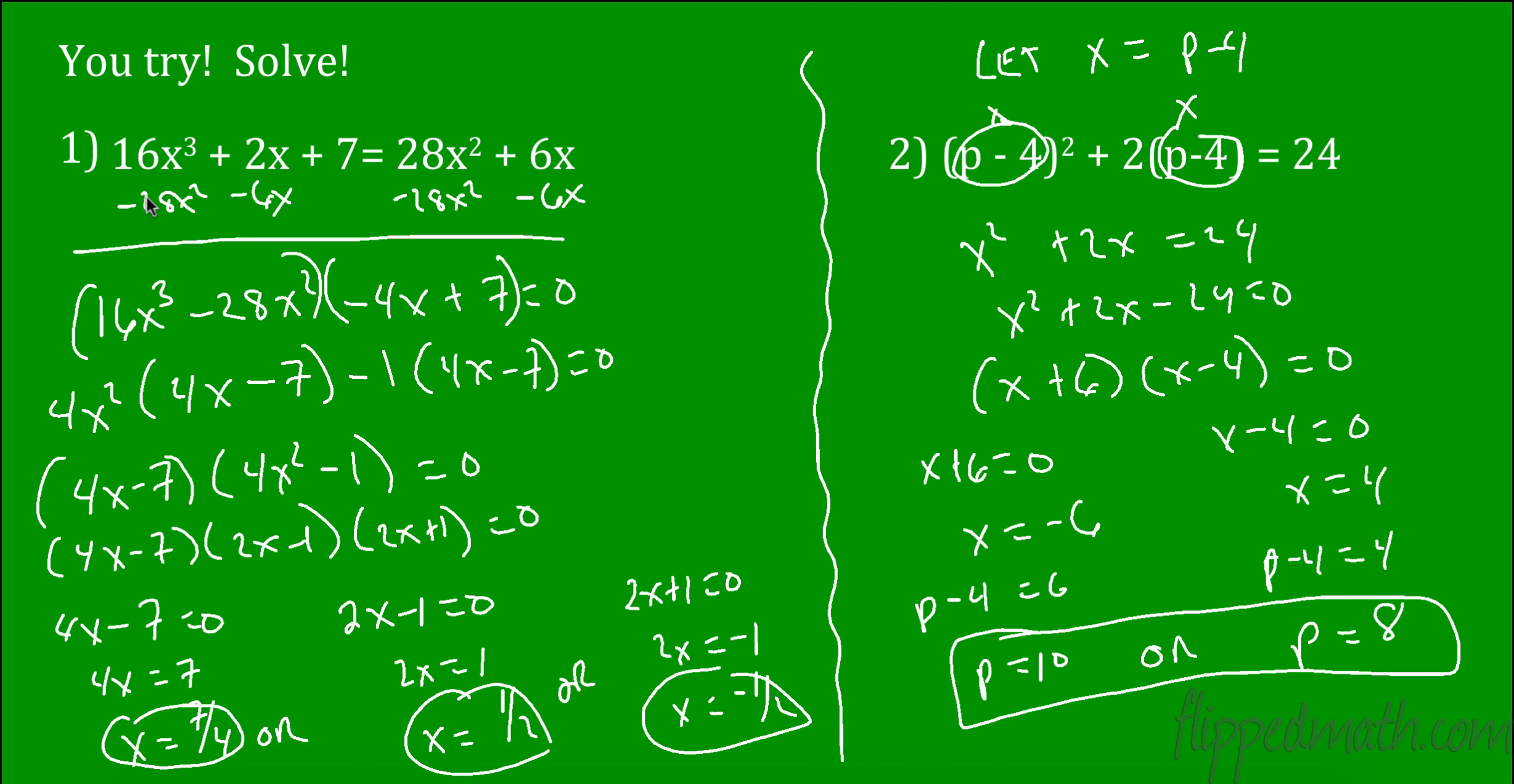So on this first one, the first thing we need to do is get all our variables on one side, all our terms on one side. And when we did that, we had four terms. Standard form. Remember, it had to be highest exponent to lowest. Then we grouped. And when we grouped, we got a difference of squares. Solved it 7 fourths, one half, or negative one half.